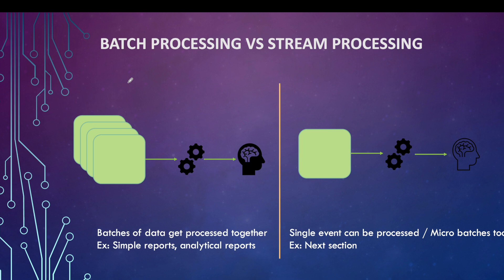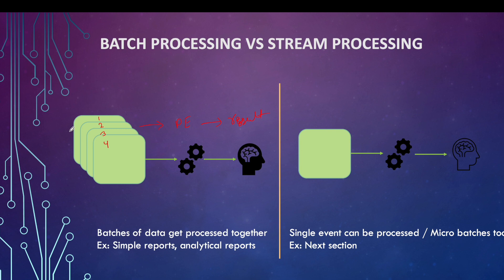Let's start with the difference between batch processing and stream processing. On the left side of the screen you can see we have one, two, three, four records and we want to process them all at once. We send them to the processing engine, which processes them and generates the result.